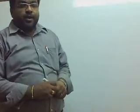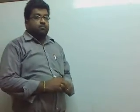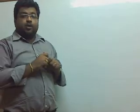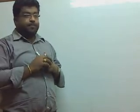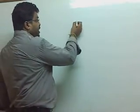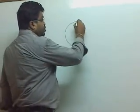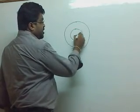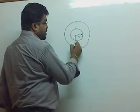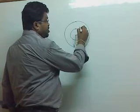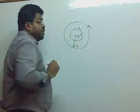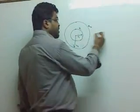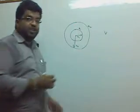Now you will see, if we have concentric different spheres, then how can we calculate the potential? Suppose we have two concentric spheres of radii R1 and R2. Suppose we have a charge Q1 and a charge Q2.